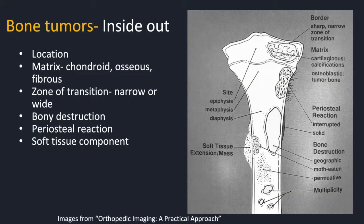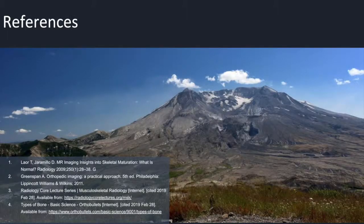For every bone tumor, there are six descriptors you need to fully characterize a lesion. Going through each in detail is beyond the scope of this lecture, but the key options include: which bone and where in the bone; what are the internal contents — chondroid, osseous, or fibrous; the zone of transition — narrow means well-circumscribed, and a wide zone of transition is indistinct; whether there is any bony destruction or periosteal reaction; and finally, whether there is any soft tissue component beyond the bone.